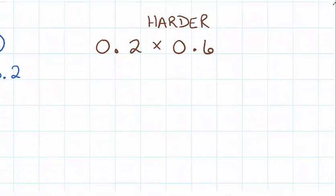For the harder one, we've got to move the decimal in both numbers. 0.2 times 0.6. In this case, we're going to say it's 2 times 6, but then we divide by 10 twice.